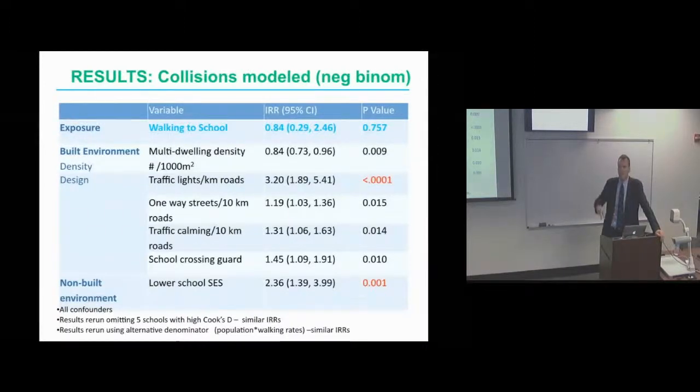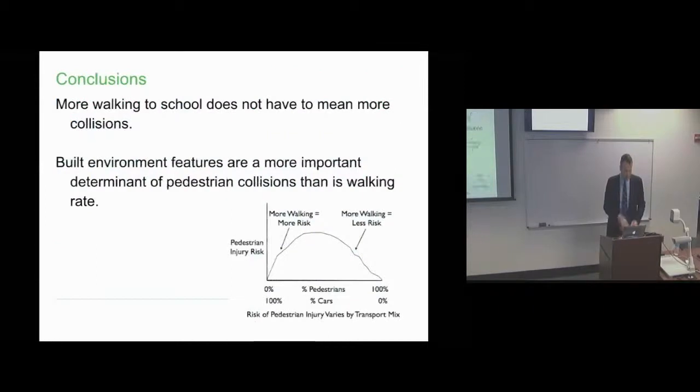This is all cross-sectional at the moment. Some of our other work has taken us into natural experiments around traffic, but it's a good conclusion. More walking to school doesn't have to mean more collisions as long as the built environment is measured and is correct.